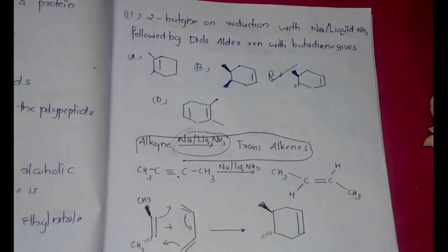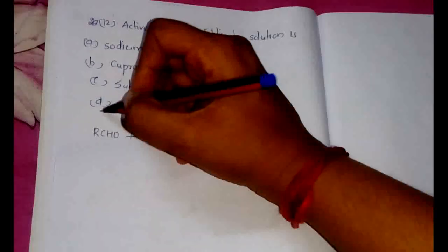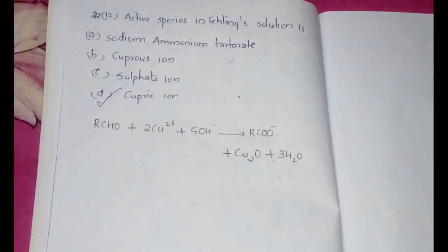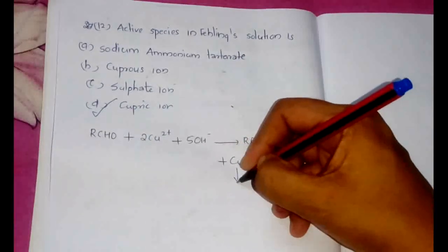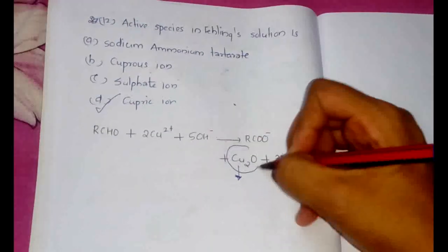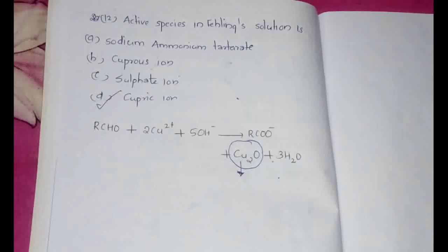Now the next question is: the active species in Fehling's solution is. So the active species is the cupric ion, and the reaction that usually occurs is, I mean the reaction that is occurring in this is RCHO plus 2Cu2+ plus 5OH- gives RCOO- plus Cu2O, which is the red deposit or the red color we see, plus 3H2O. So this also can be a question asking what is the red color, what species causes the red color in the Fehling's test. So you have to remember this as well.